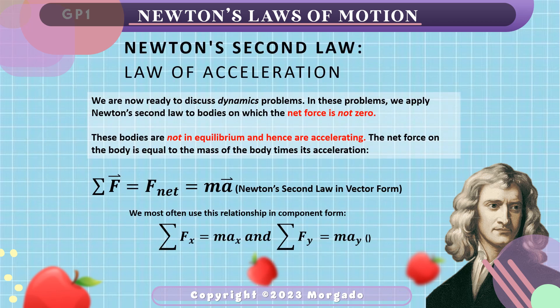The general formula for acceleration is simply F-net equals mass times acceleration. However, this F-net is dependent on its components, meaning there could be many forces acting on the object both along the horizontal and the vertical. So we must consider the summation of forces along the horizontal and the vertical, as well as the acceleration happening along each axis. This is also what we do when we solve vectors by direction.